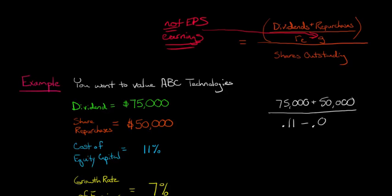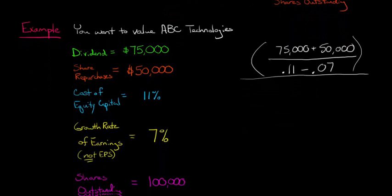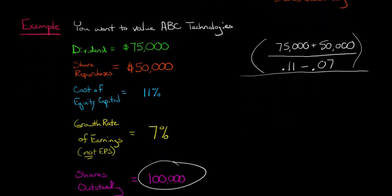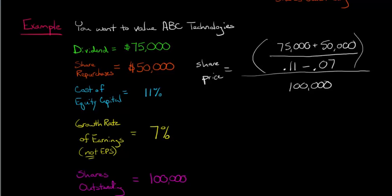Cost of equity capital is 11%, growth rate of earnings is 7%. So we're just going to have 0.11 minus 0.07, and then I'm just going to put this all in parentheses because we're going to take this whole thing and divide it by the number of shares outstanding, which I'll just drop down so you can see that, that's 100,000. And so we've got 100,000. All of this is going to give us our share price.